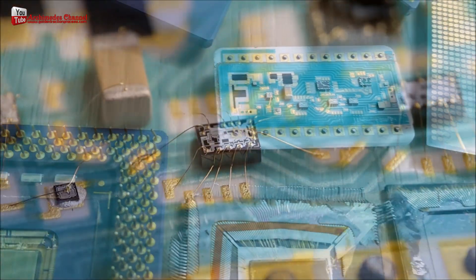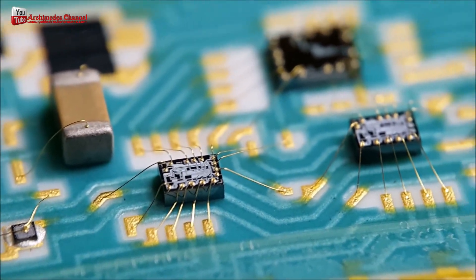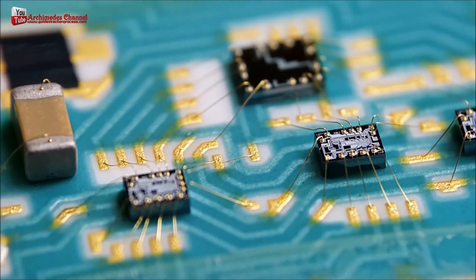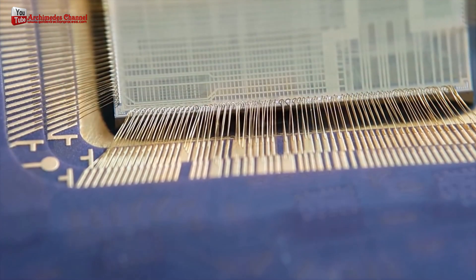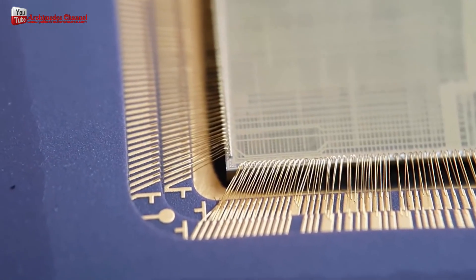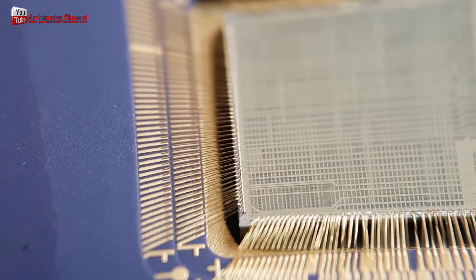Once the gold wire is extracted, it can be refined to remove any impurities and increase the purity of the gold. This refining process can be done using a variety of methods, including chemical leaching, smelting and electroplating.